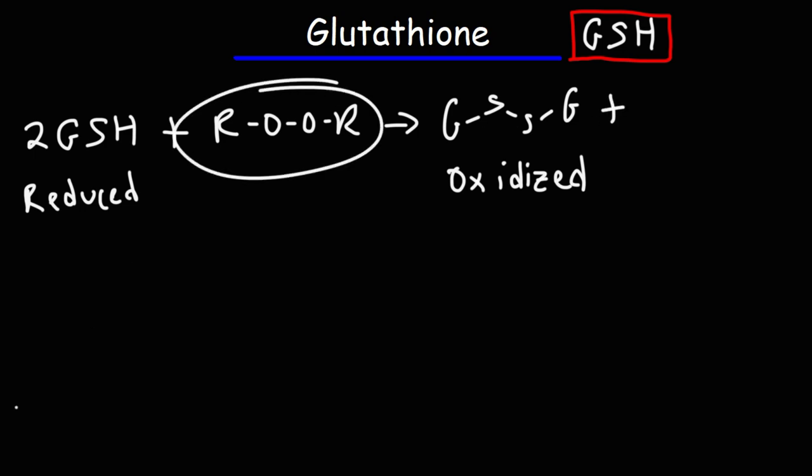Now the organic peroxide is going to be reduced into an alcohol. Organic peroxides can generate free radicals that can be very damaging to cells in different muscle tissues. So glutathione can protect cells from the oxidative ability of an organic peroxide. That's one way in which glutathione serves as an antioxidant.